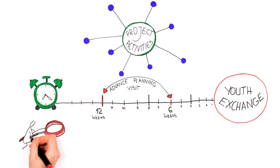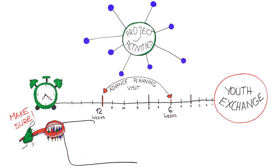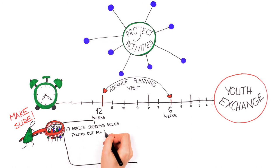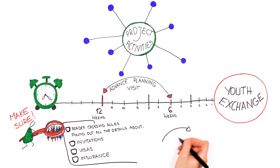Make sure people travelling to the advanced planning visit have checked border crossing rules and found out all the details about invitations, visas and insurance. It varies in partner regions from country to country. Different rules may apply within the EU as well depending on whether the country is in the Schengen area or not.